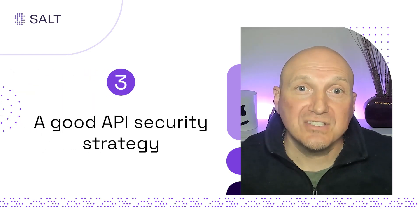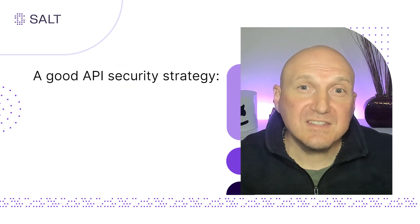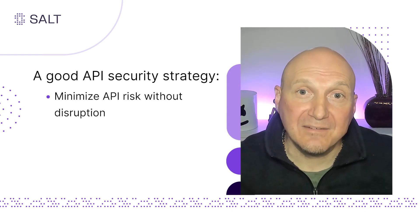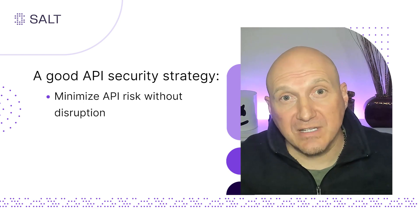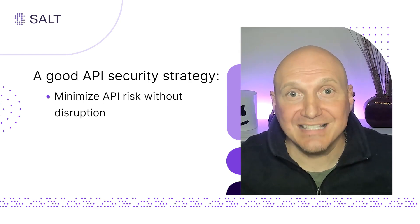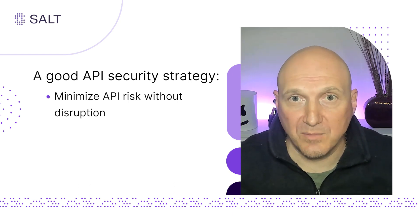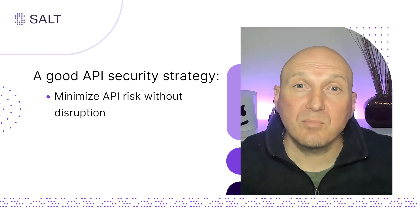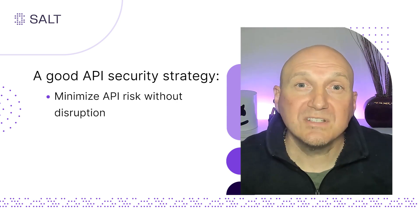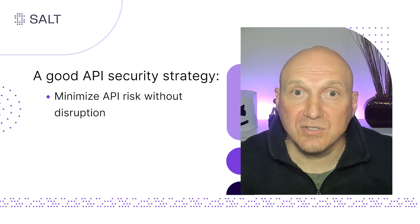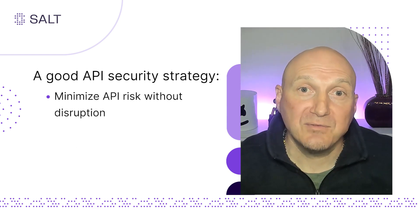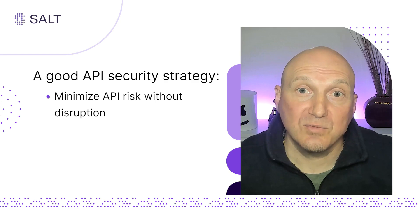Third is applying the right technology to realize a sound API security strategy. A good API security strategy is twofold. First is the goal of quickly minimizing API risk without disrupting your ability to innovate and advance your business. Because of the challenges discussed earlier, you have to assume every API in production has some type of logic or posture vulnerability associated with it. And each API business logic flaw is essentially a zero-day attack opportunity. This is where proper API runtime protection is key. The goal is to create a safety net to ensure that malicious API user intent will be detected and thwarted. Using purpose-built cloud-scale machine learning behavioral modeling and AI is a must when it comes to reducing risk now.